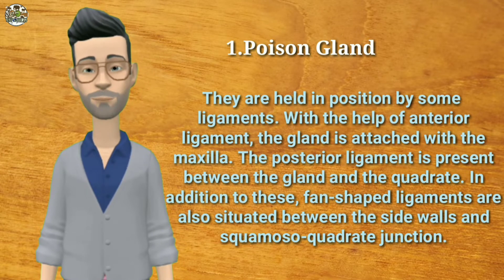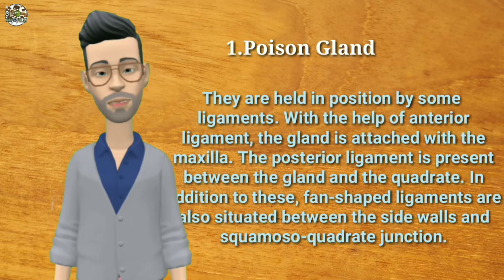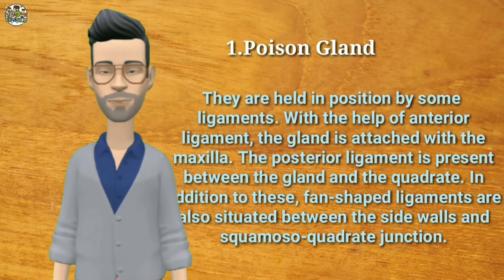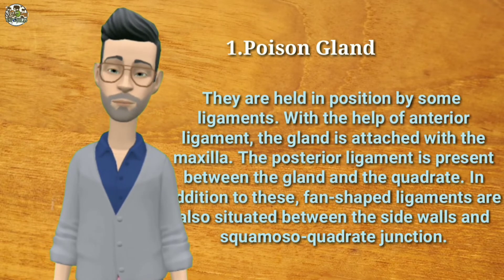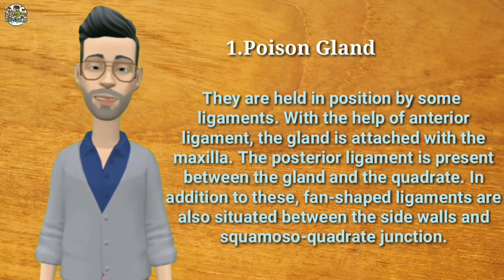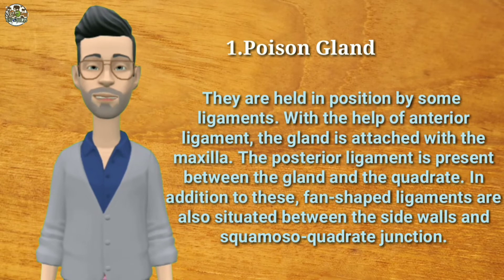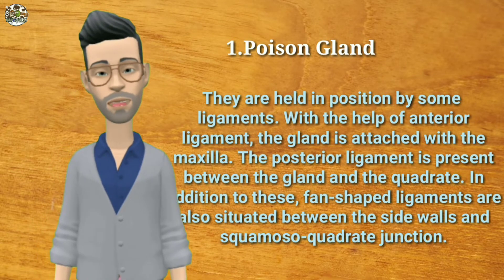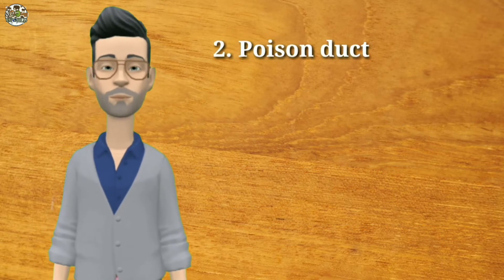The posterior ligament is present between the gland and the quadrate. In addition to these, fan-shaped ligaments are also situated between the side walls and the squamoso-quadrate junction.